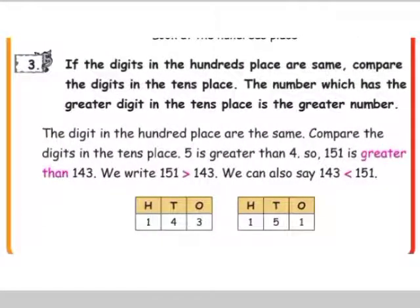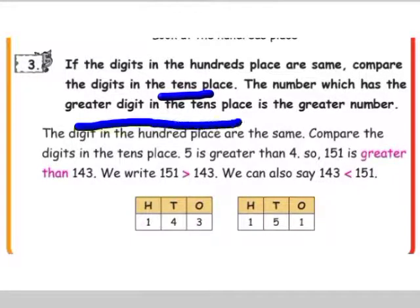Third rule: if the digits in the hundreds place are the same, we compare the digits in the tens place. The number which has the greater digit in the tens place is the greater number.